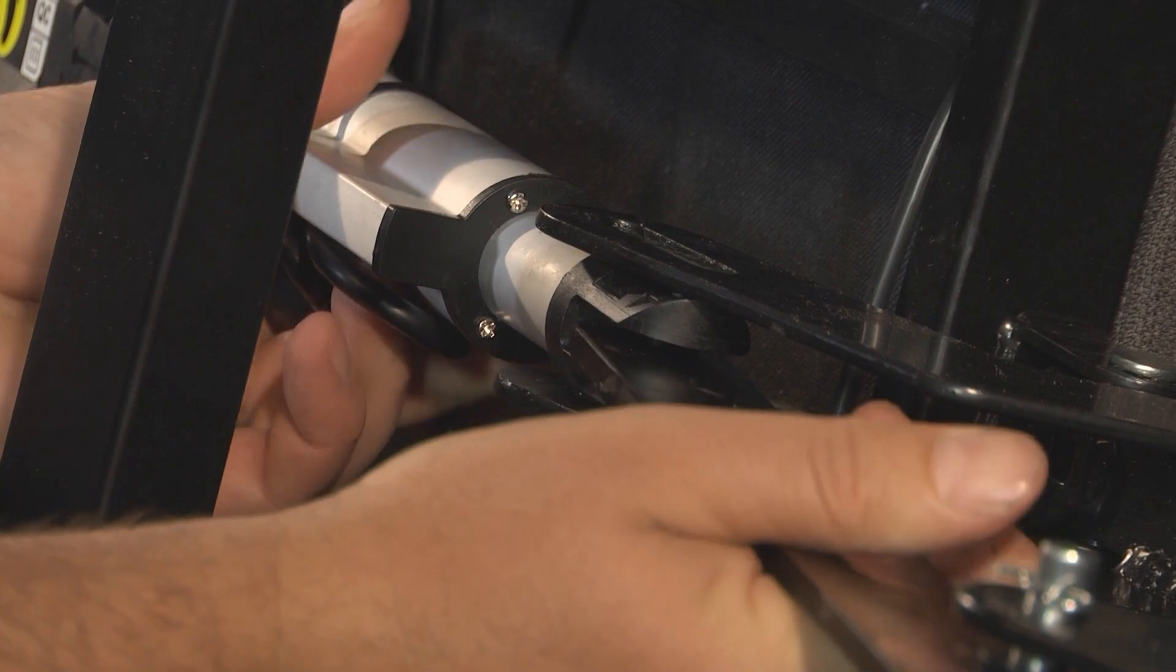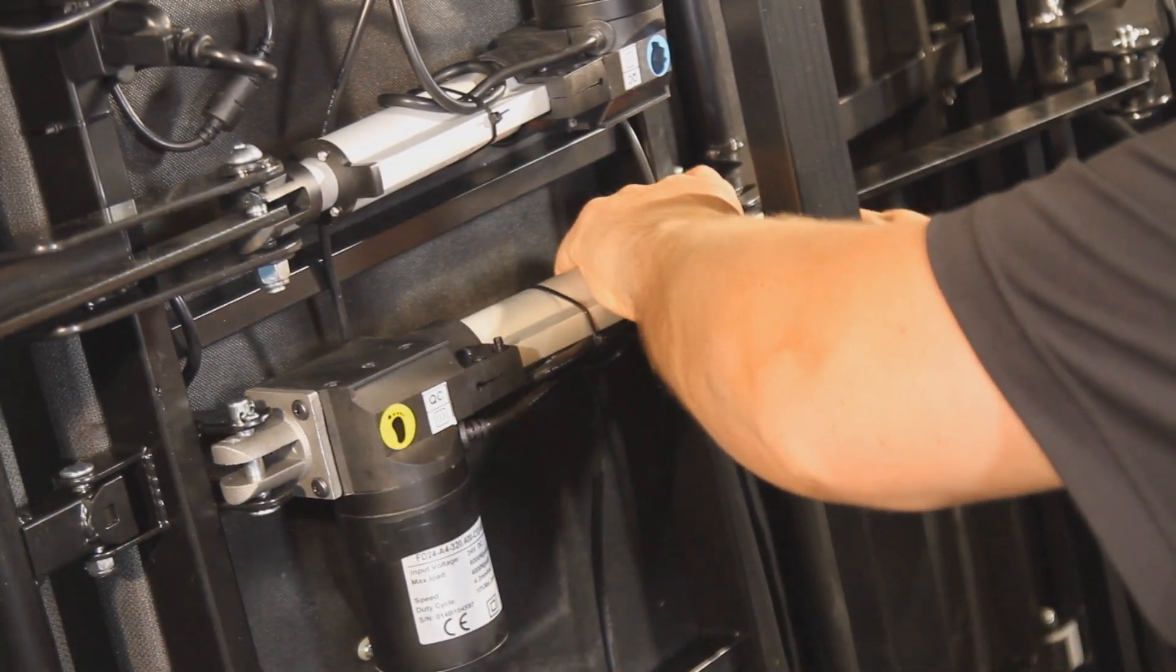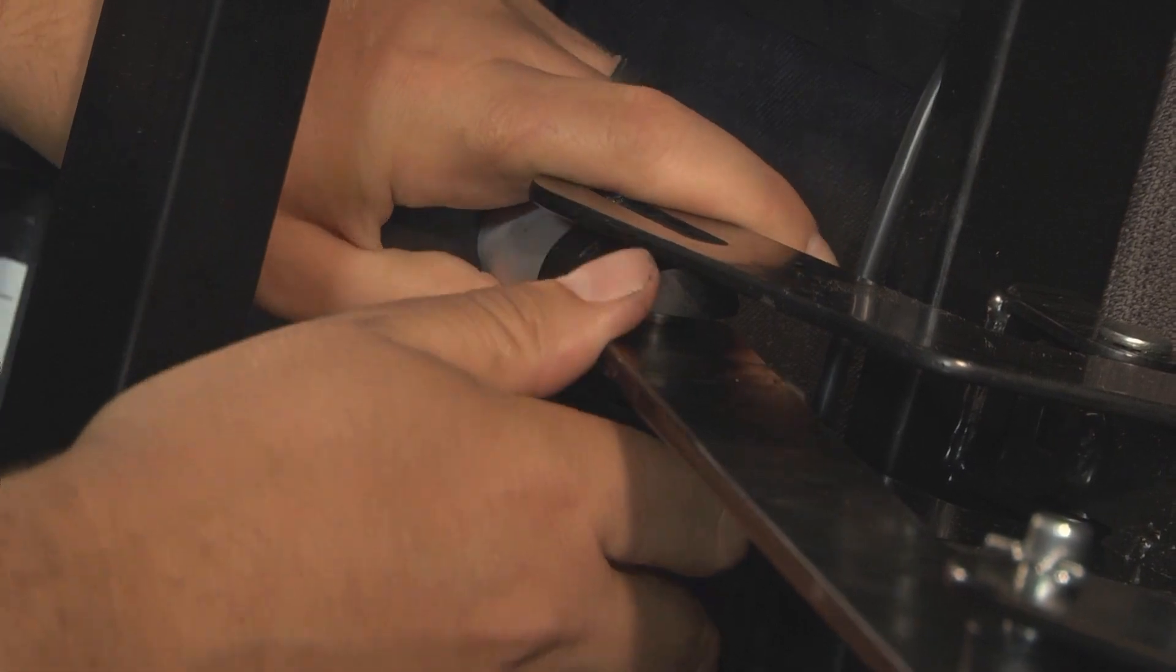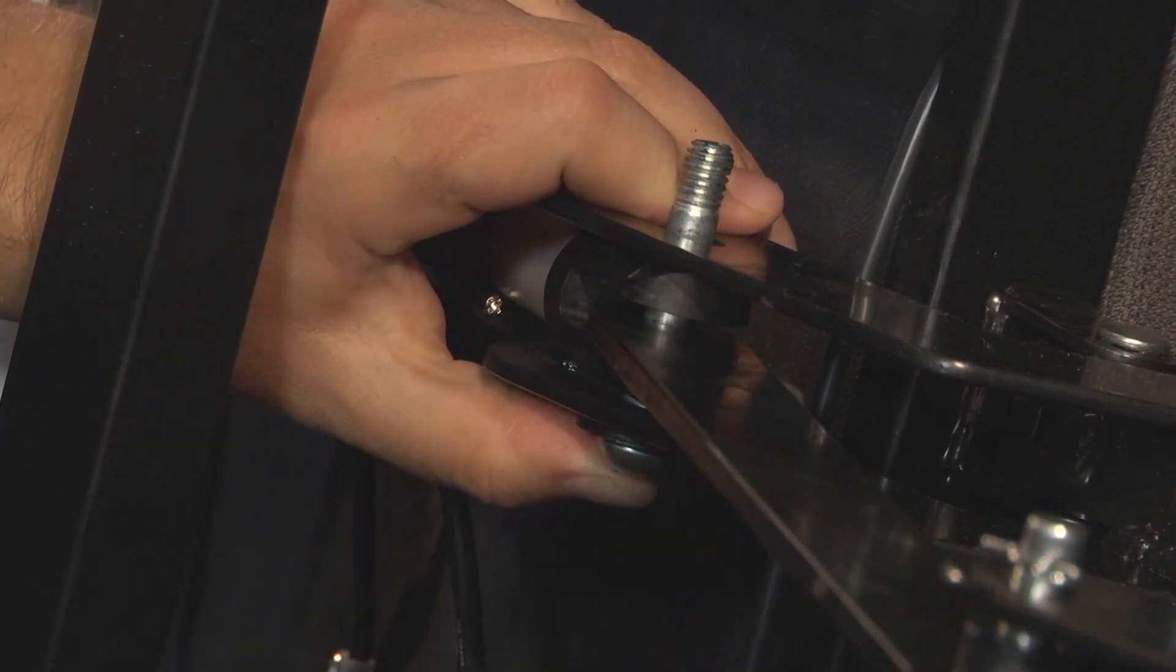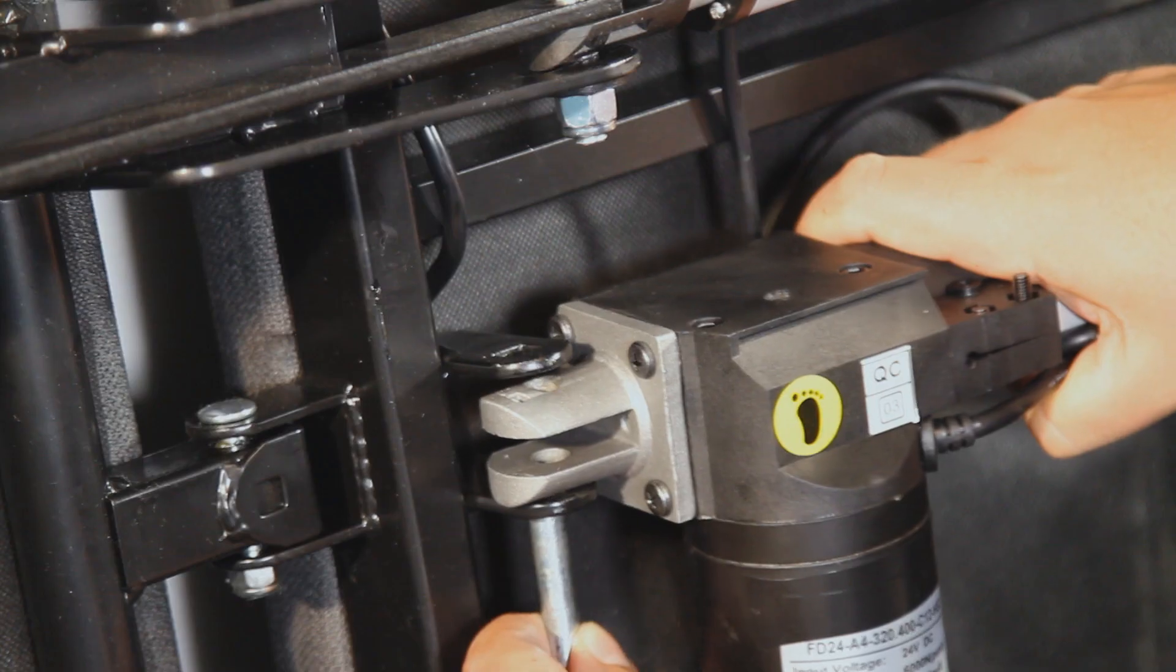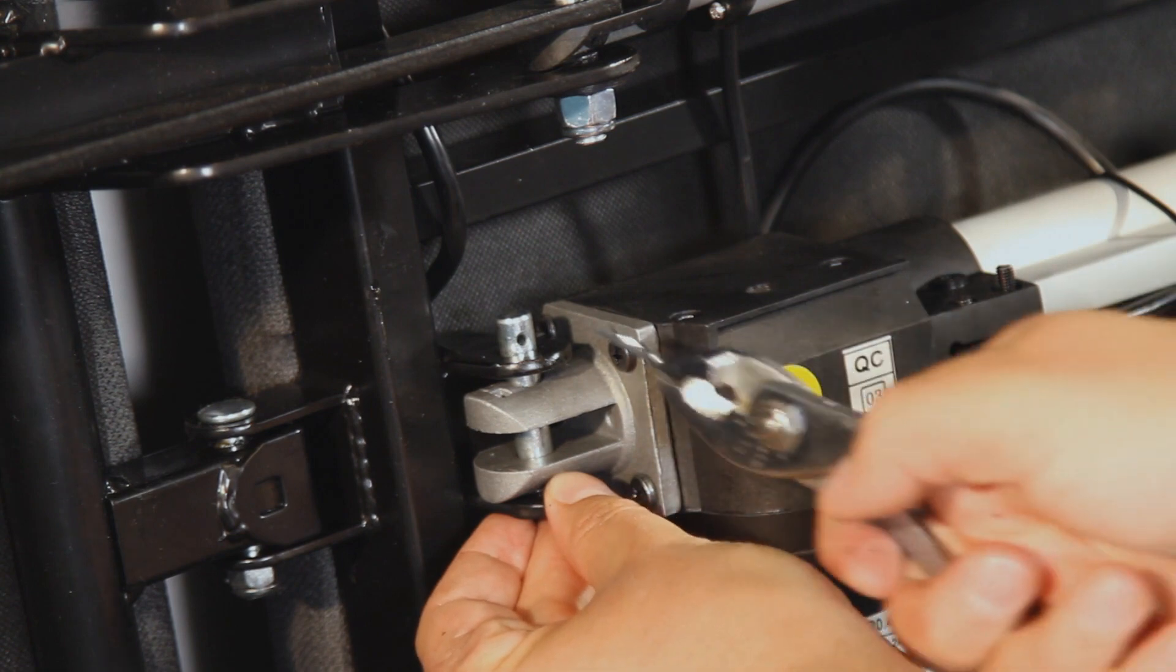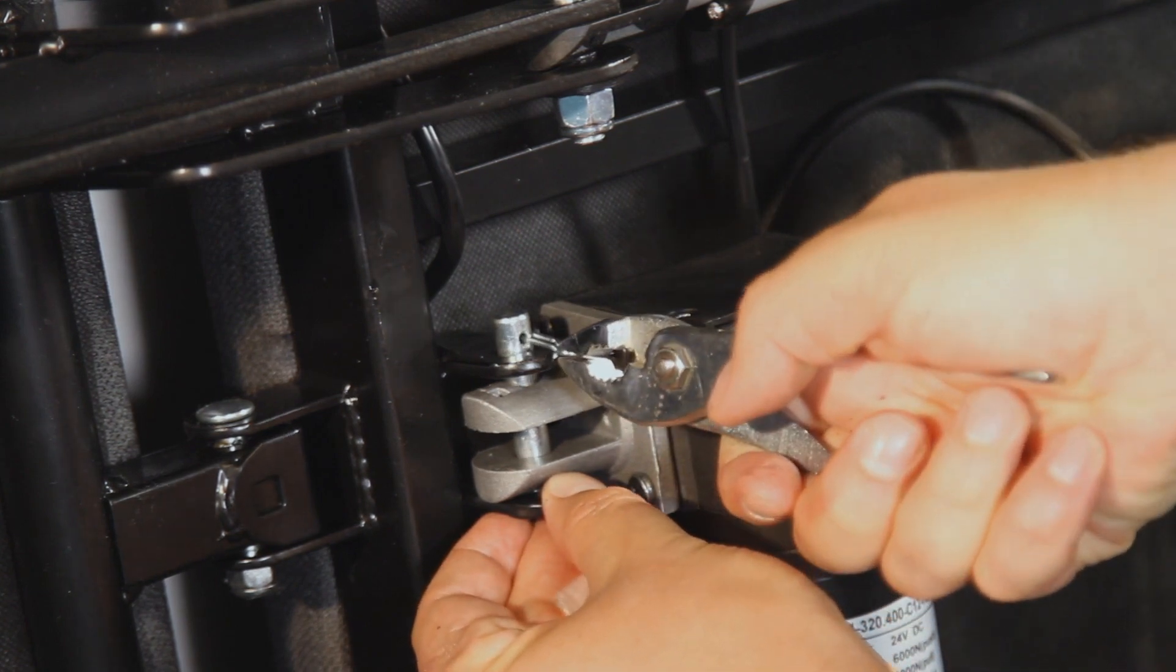Align the new actuator with the lift arm. Insert the bolt through the housing, then the lift arm, and through the other housing. Use the Allen wrench and the regular wrench to tighten the bolt. On the motor end of the actuator, insert the cotter pin shaft and then secure it with the pin.